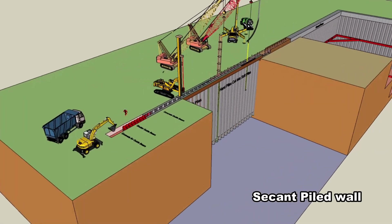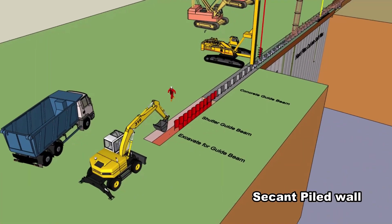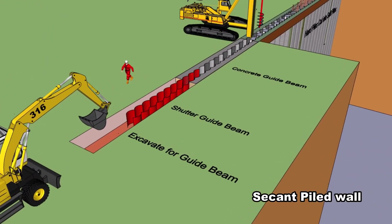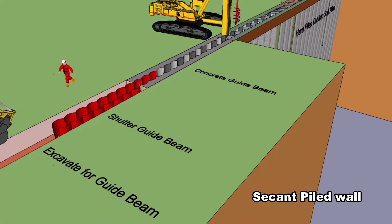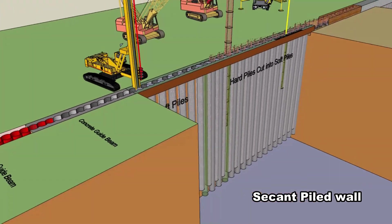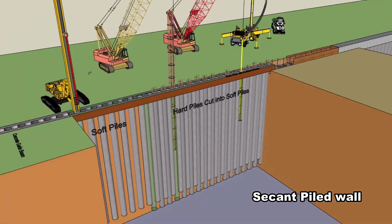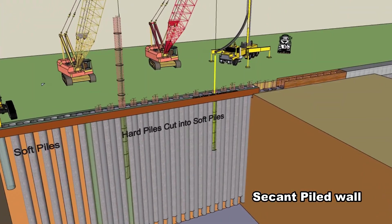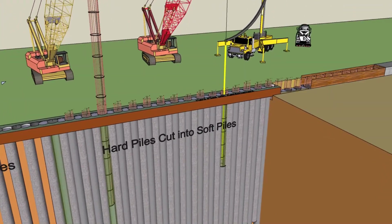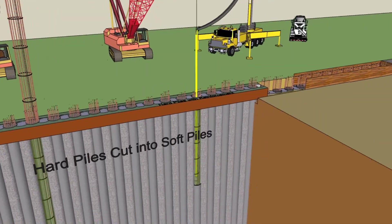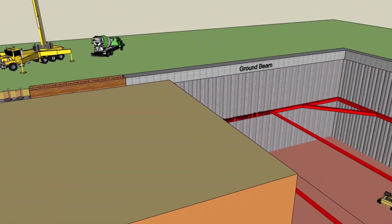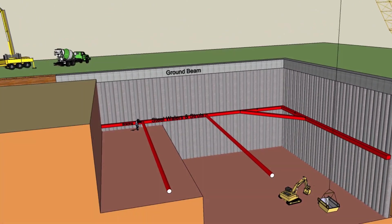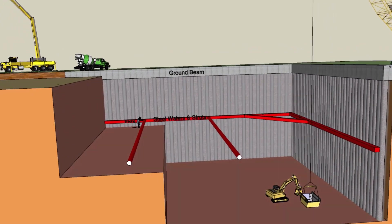Secant piled wall. Construct primary piles that are not reinforced. Construct secondary piles and cut into the sides of the primary piles. These secondary piles are reinforced.